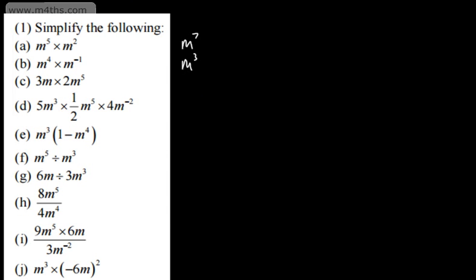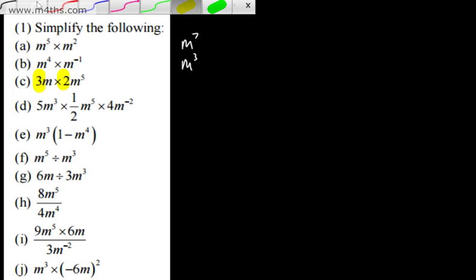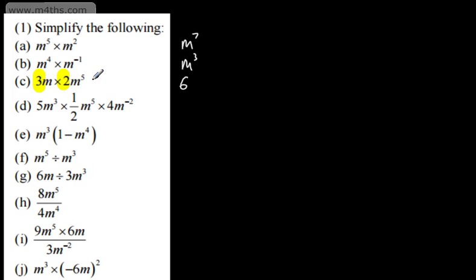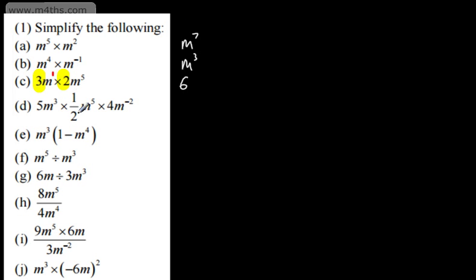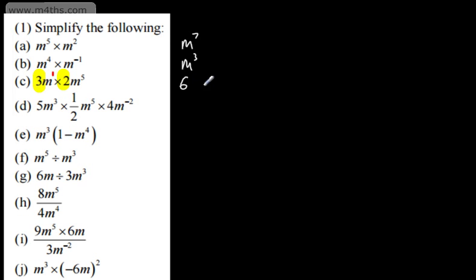What we have now is simply integer values in front of the m's — all we do is multiply those. So 3 times 2 gives me 6. Here we've got m — students initially forget that this is m to the first power, not zero. If it was 0 it would simply be 1, which we'll look at in a later video. So 1 plus 5 gives us 6m to the power of 6.